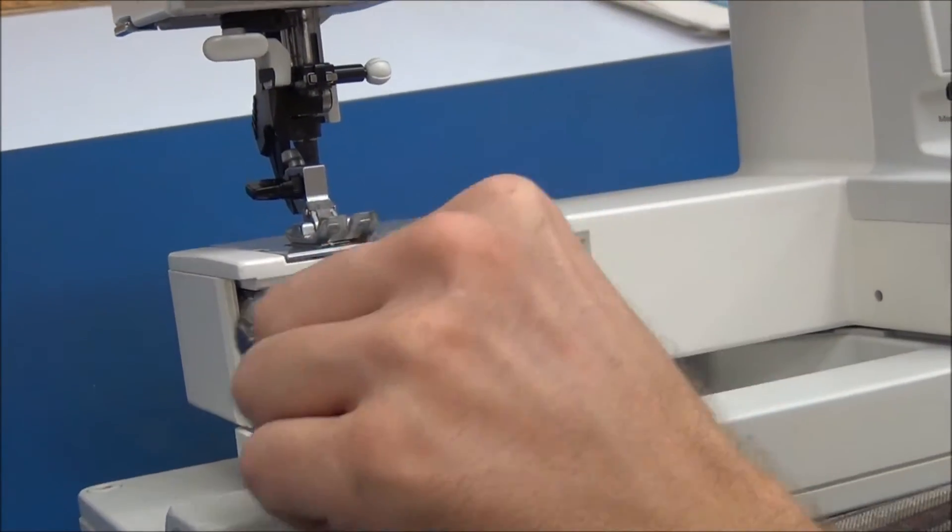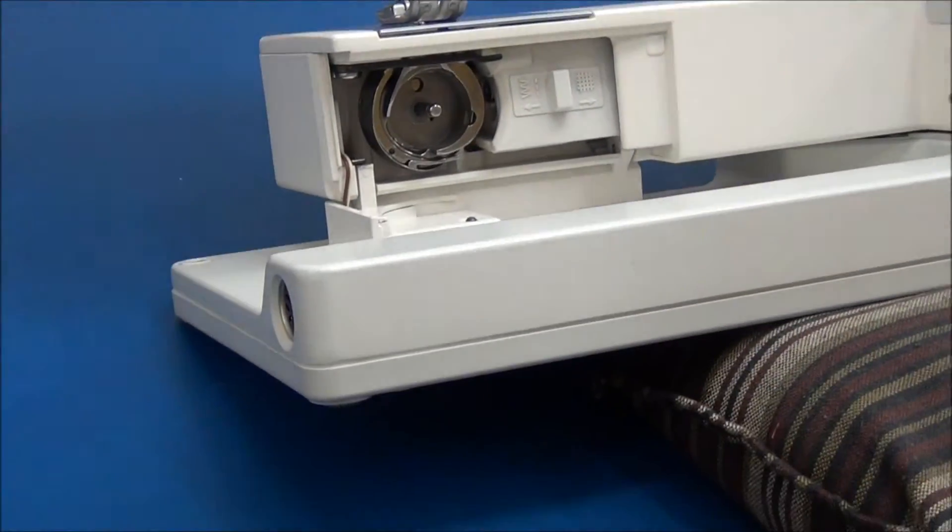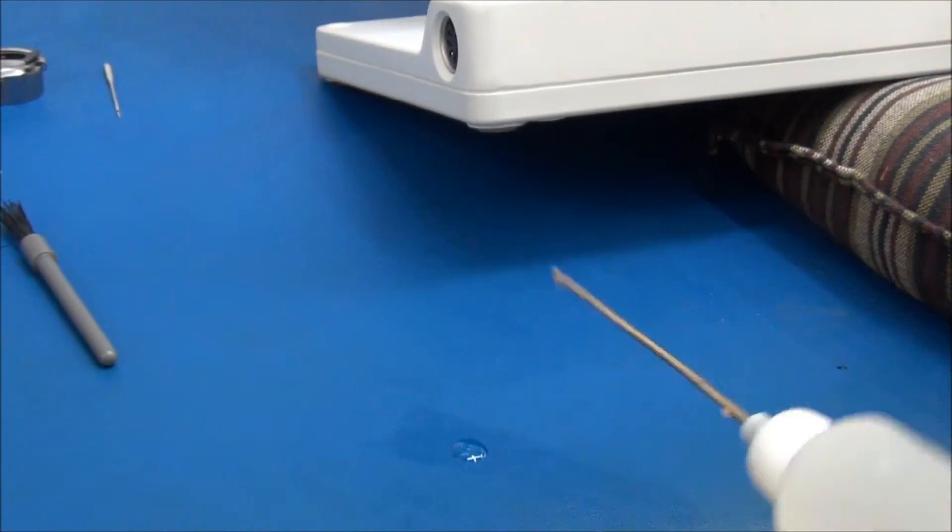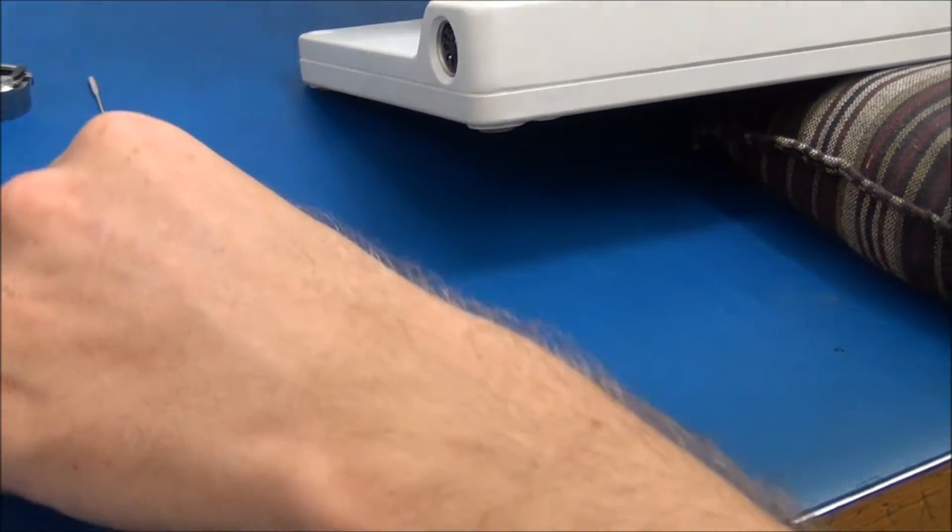First remove the needle, then the bobbin case. Then what you're going to do is put a drop or two of oil on the table. You're then going to dip your lint brush in this.